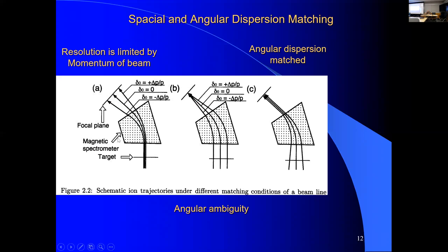In the case of the Grand Raiden, the ring cyclotron at Osaka has a resolution for 200 MeV protons of something like 120 keV. So you would never get a resolution better than 120 keV if you just focus the beam achromatically on target. What you need to do is make the dispersion on target such that different momenta arrive at one spot. Then with the spectrometer, despite the beam spread being 120 keV, you can get a resolution of 20 keV — which is the limit of the resolving power of the instrument, not a feature of the beam.